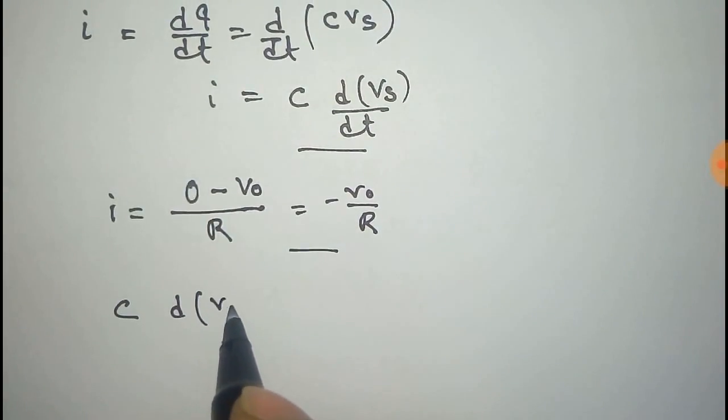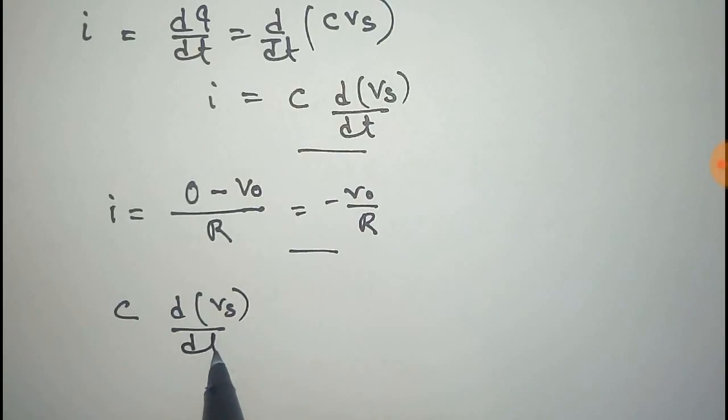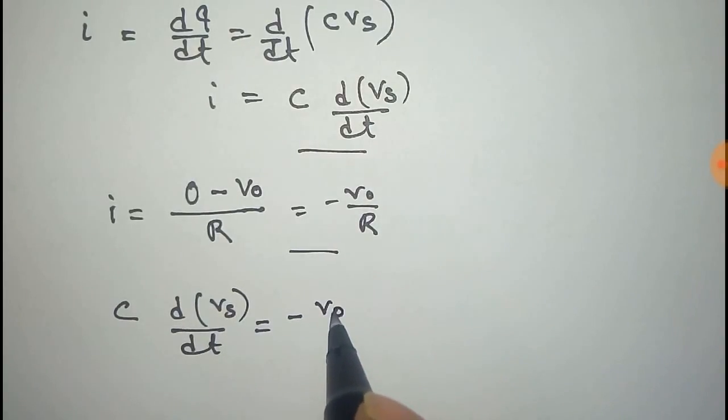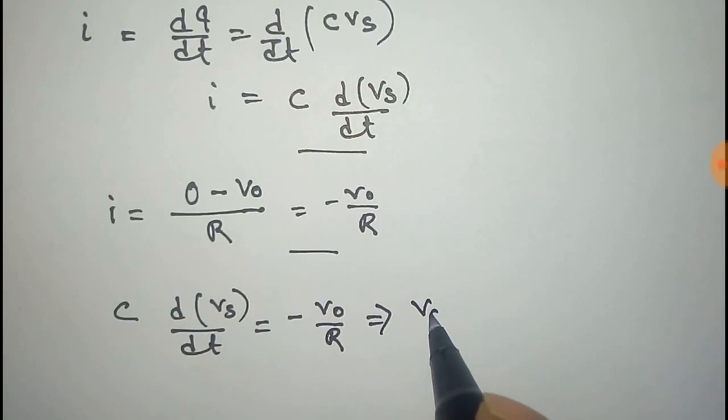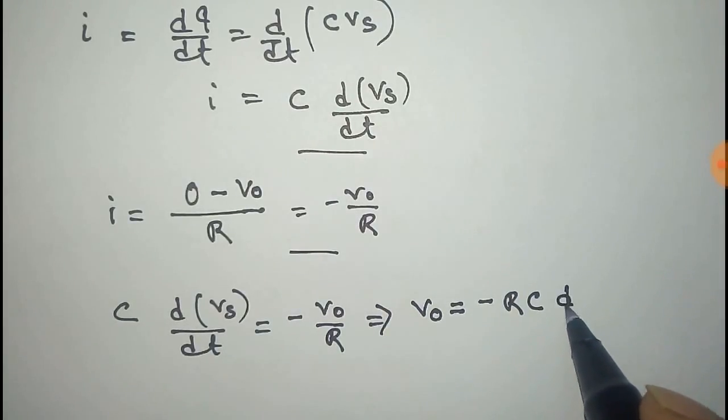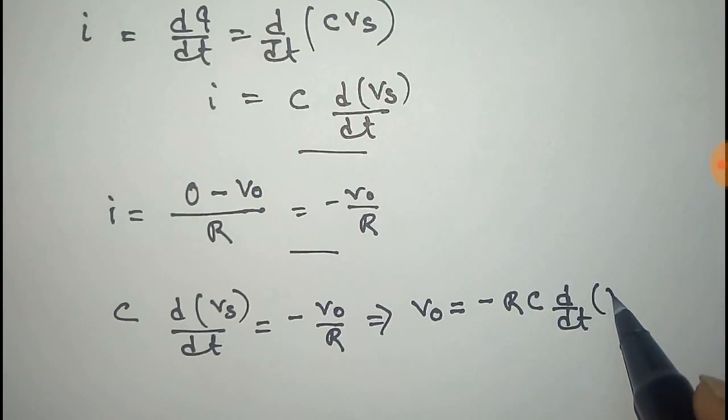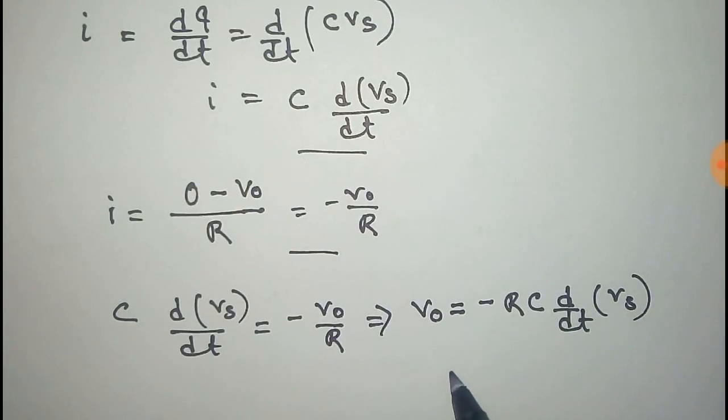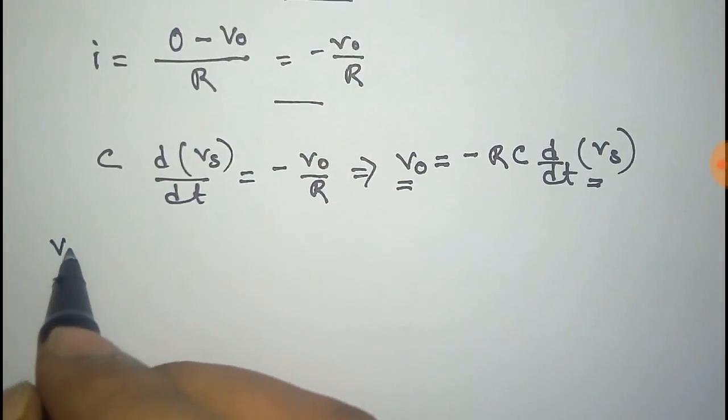C d(Vs)/dt = -Vo/R. From this, Vo = -RC d(Vs)/dt. This is the output and this is the input, so the output is the derivative of input.